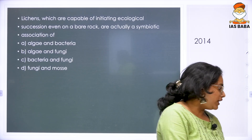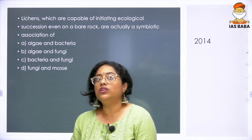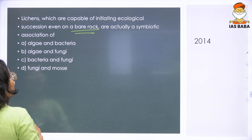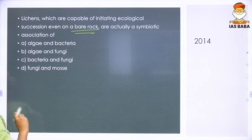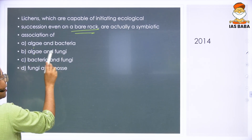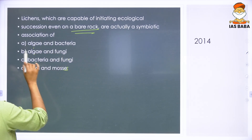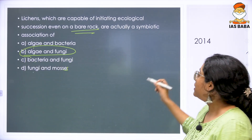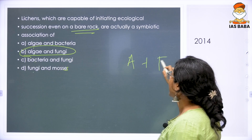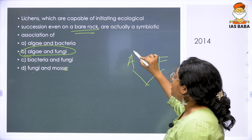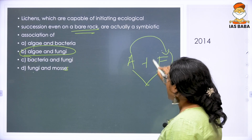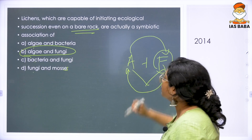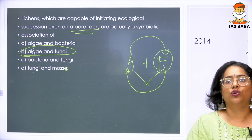The next is a 2014 question: lichens, which are capable of initiating ecological succession even on a bare rock, are actually a symbiotic association of — algae and bacteria, algae and fungi, bacteria and fungi, or fungi and mosses. The answer is algae and fungi. Symbiotic means an association where both organisms are benefited — the algae gets shelter from predators via the fungi, and the fungi gets food from the algae.